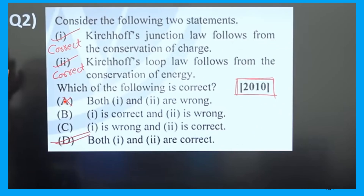Multiple choice question: Consider two statements. First, Kirchhoff's junction law follows from conservation of charge. Second, Kirchhoff's loop law follows from conservation of energy. Which is correct? Option D — both 1 and 2 are correct — is the answer. Kirchhoff's first law follows conservation of charge; Kirchhoff's second law follows conservation of energy.